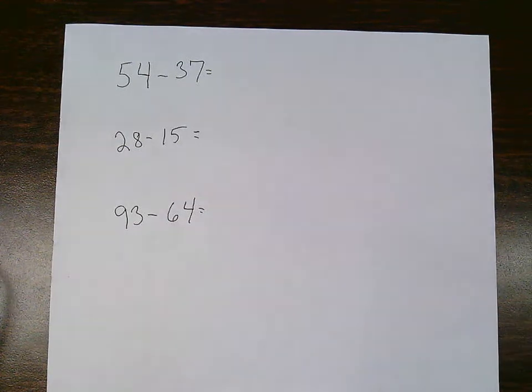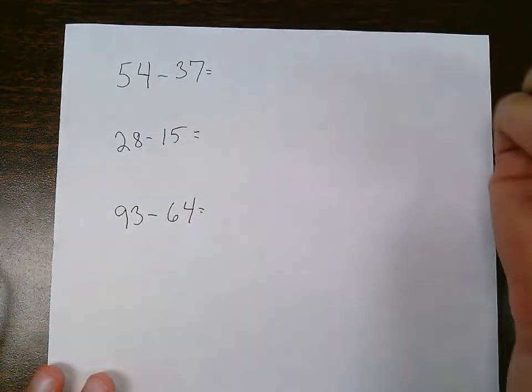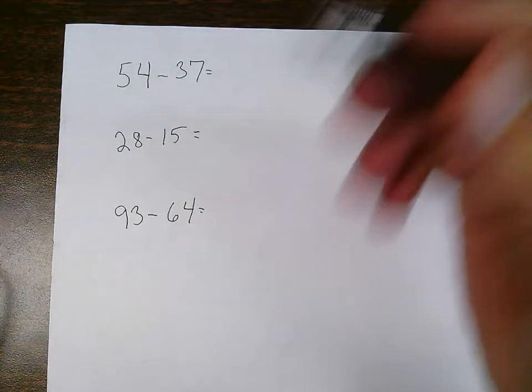Today we're going to talk about subtracting two-digit numbers. Now the first thing we need to do is take these numbers and put them vertically, put them up and down.